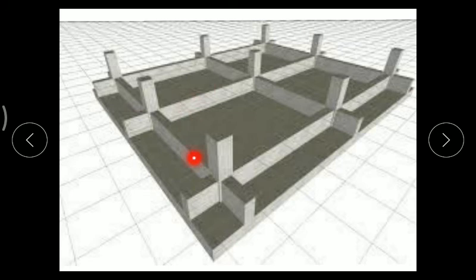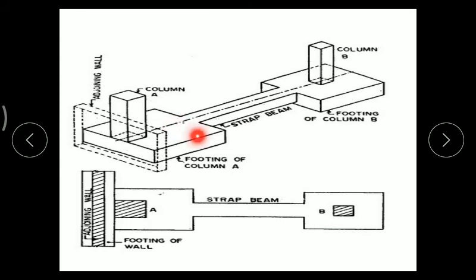If a number of columns are to be supported by a single flat slab, that footing is known as mat footing or raft footing. If two footings are to be connected by a beam, it is known as strap footing. Due to eccentric loading — for example, if the column is nearby a property line and has eccentric loading — we can use a strap beam.